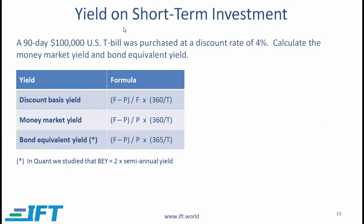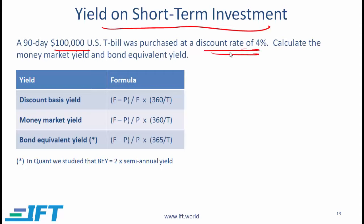You need to be able to calculate the yield on short-term investments. If you are running a corporate finance function at a company, then you will be making short-term investments and you need to understand the yields or the returns that you are getting. This material should look familiar because we covered this in quantitative methods. Let's say that you want to invest in a US T-bill and a 90-day $100,000 T-bill is purchased at a discount rate of 4%. You need to calculate the money market yield and the bond equivalent yield.